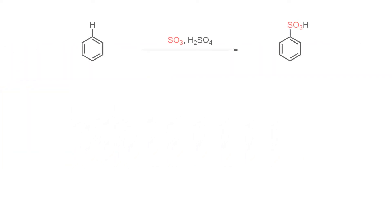When benzene is treated with sulfur trioxide and concentrated sulfuric acid, benzenesulfonic acid is produced. This reaction occurs through electrophilic aromatic substitution, in which a hydrogen from the benzene ring is replaced by the SO₃H group.